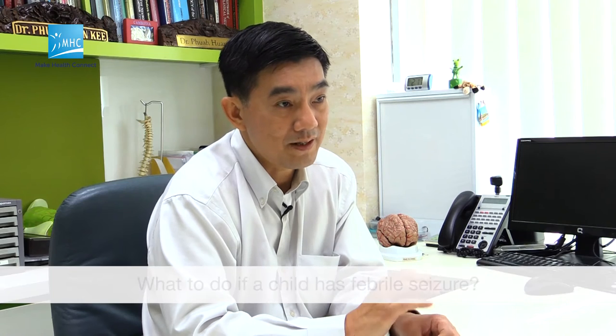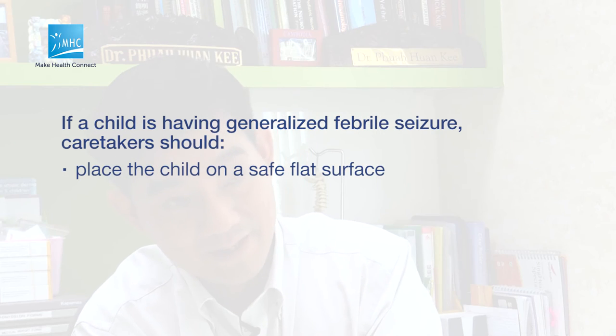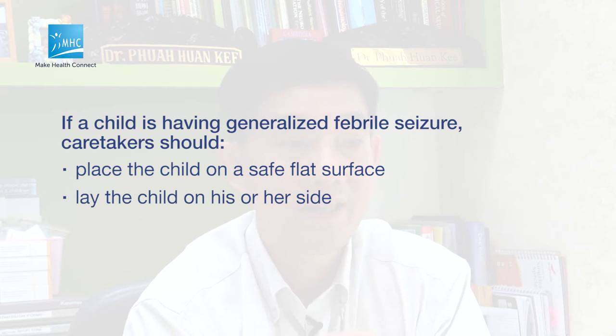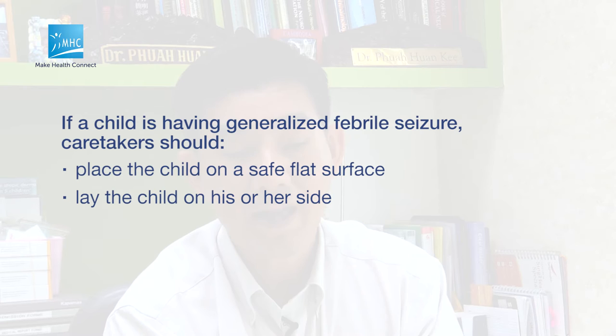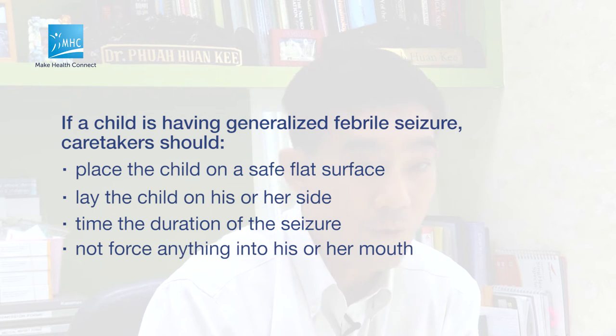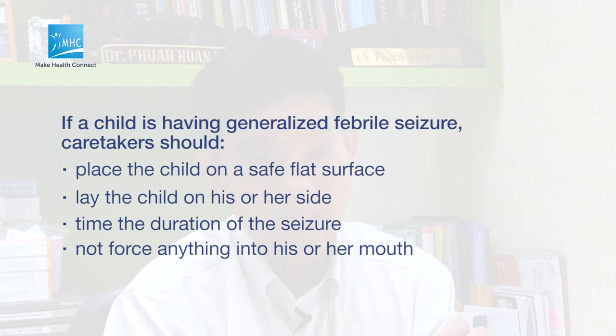What parents should do first and foremost is not panic. If there is a generalized seizure — jerking of the hands and legs with loss of awareness and clenched teeth — lay the person down on a flat surface and turn the body to one side, so that any vomiting won't go into the chest and cause a chest infection. Watch and time the duration of the seizure. There is no need to force anything into the mouth, as hard objects may break teeth, cut the oral cavity, or if pushed too deep, induce vomiting and cause choking.